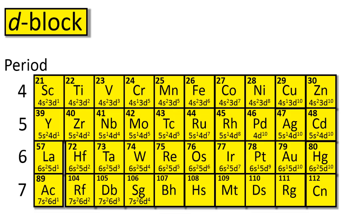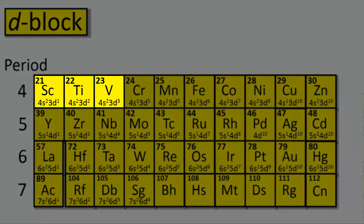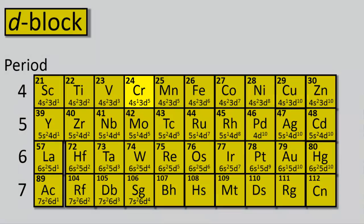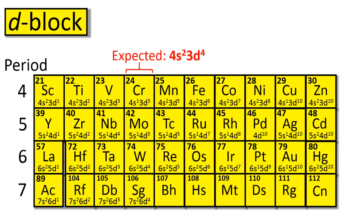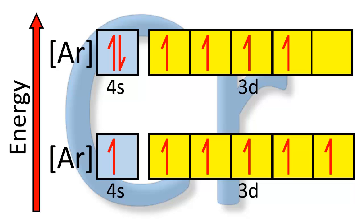This results in electron configurations that deviate from what is expected. Take a look at scandium, titanium, and vanadium — these three electron configurations are to be expected, with the 4s orbital filling up completely before the 3d orbitals start to fill. But look at chromium. The electron configuration of chromium is 4s¹ 3d⁵ instead of the expected 4s² 3d⁴. The reason is that the electrons enjoy a special stability associated with the half-full d-sub-level, resulting in a lower energy configuration.